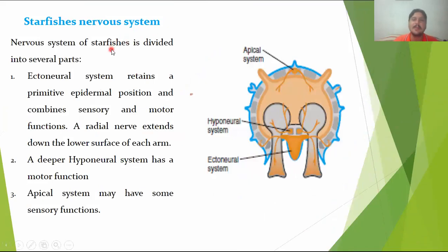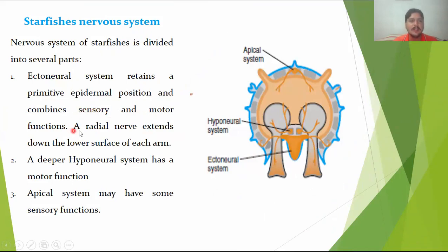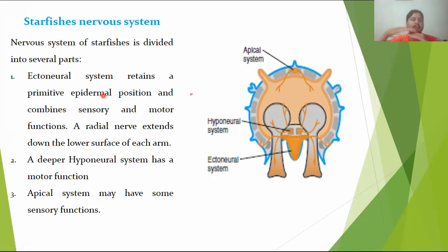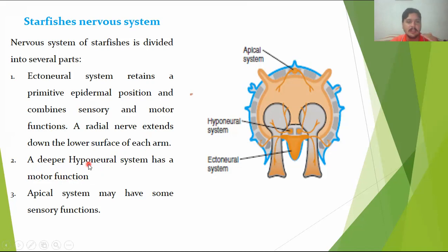Returning to the starfish nervous system — the first evolutionary trend is also known as the nerve net. Within the fourth trend, specifically the ganglionic system, the ectoneural system retains a primitive epidermal position and combines sensory and motor functions. A radial nerve extends down the lower surface of each arm. A deeper hyponeural system has a motor function, while the ectoneural system on the upper side receives all sensory messages. The apical system also serves a sensory function.